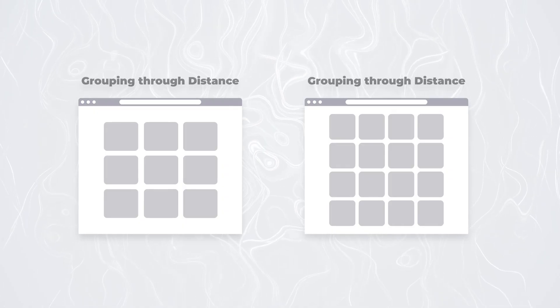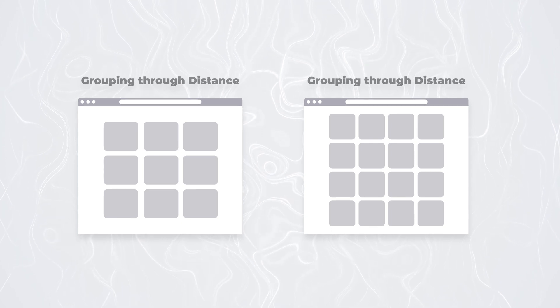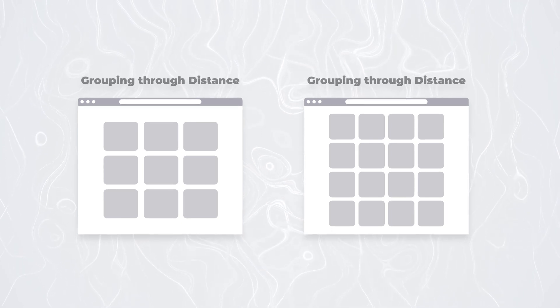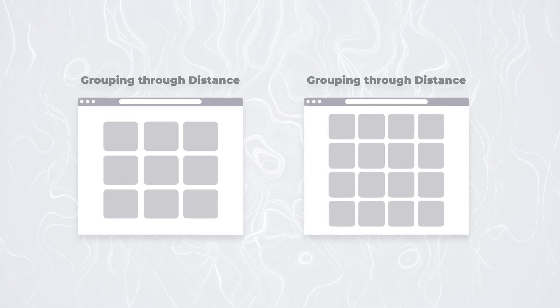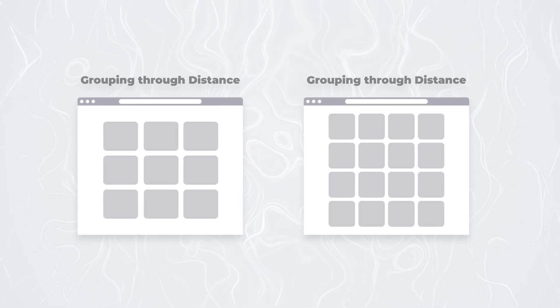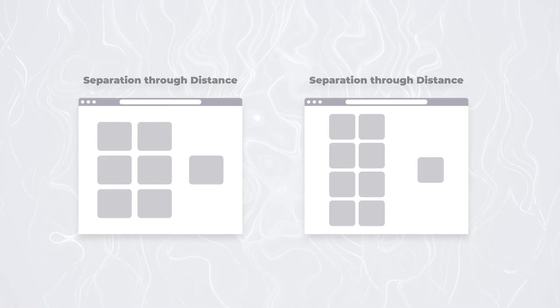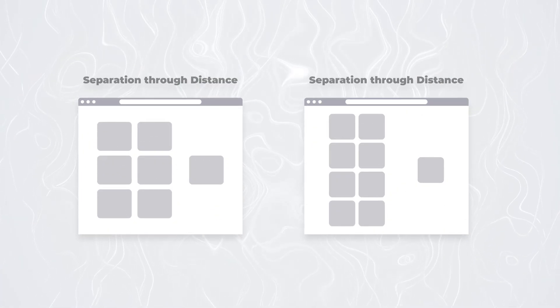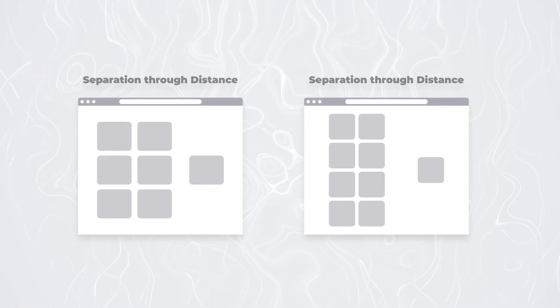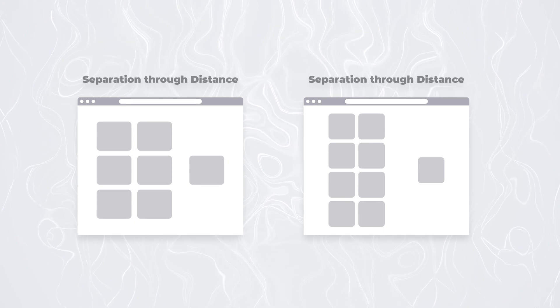We can also use the positioning of items to indicate importance and relation to other ones. Put similar items close to each other and our brains immediately tell us it's a group of items with similar functions. Put an item away from everything and it looks important, focusing our attention on it. The next element that defines any good layout is flow.